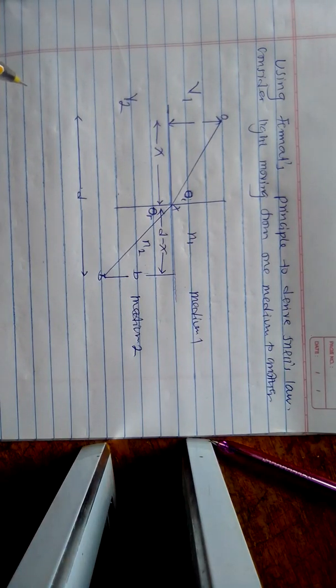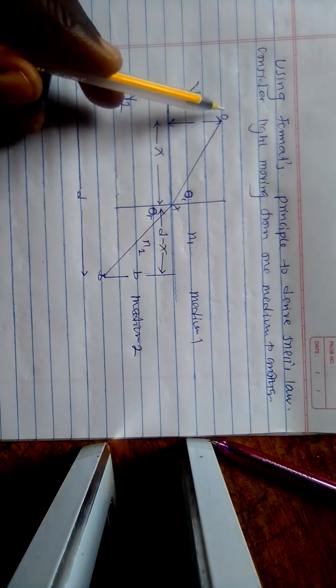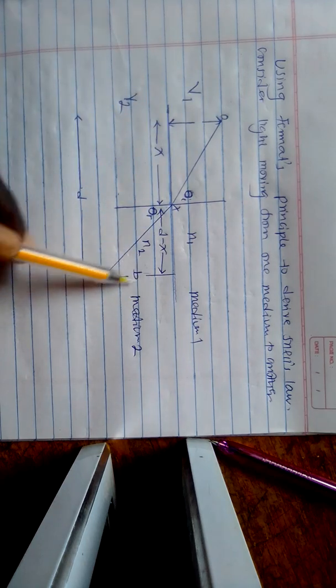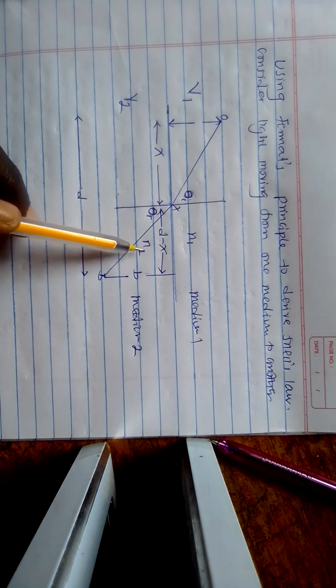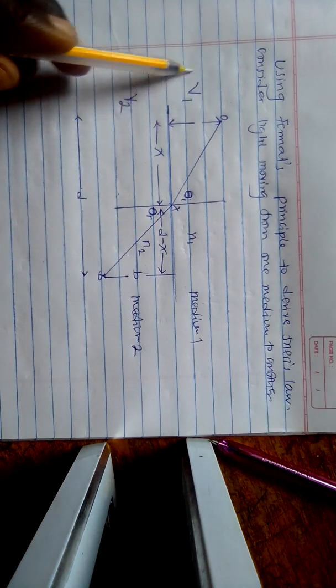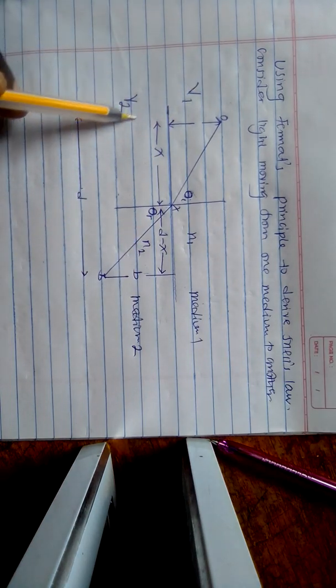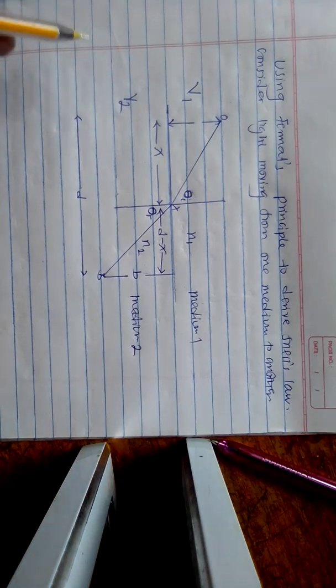Greetings to everyone. We want to look at how to use Fermat's principle to derive Snell's law. We are considering light moving from one medium to another medium. This is medium 1, this is medium 2. Medium 1 has index n1 and medium 2 has index n2. The speed of light in medium 1 is V1 and the speed of light in medium 2 is V2.